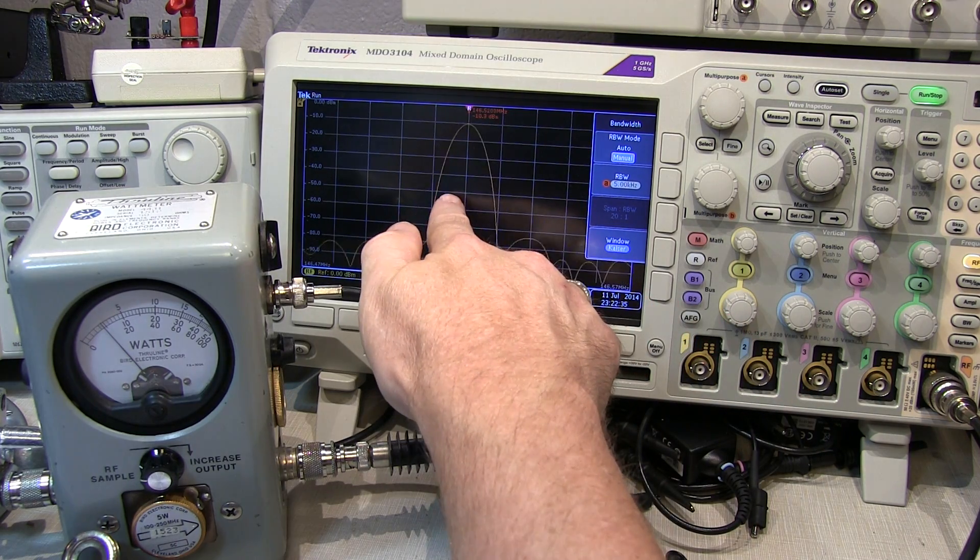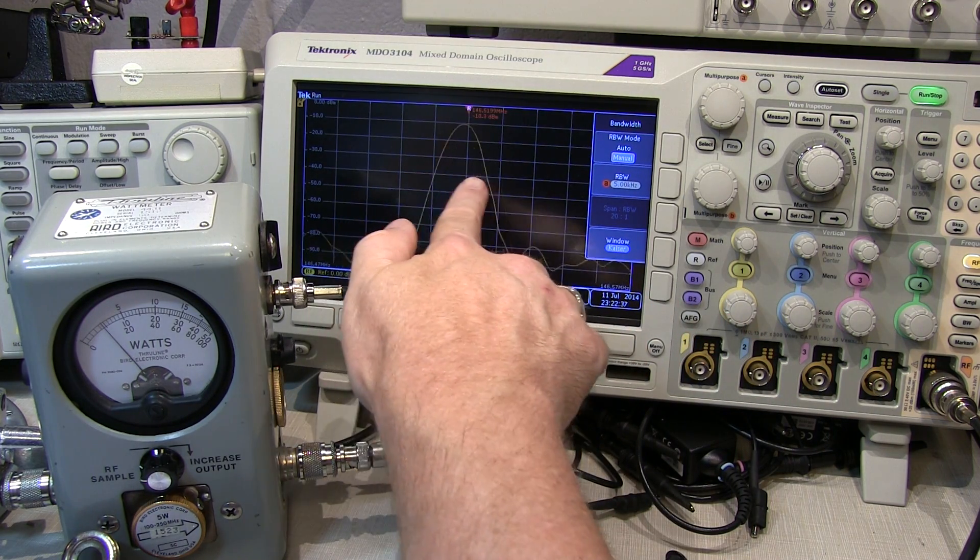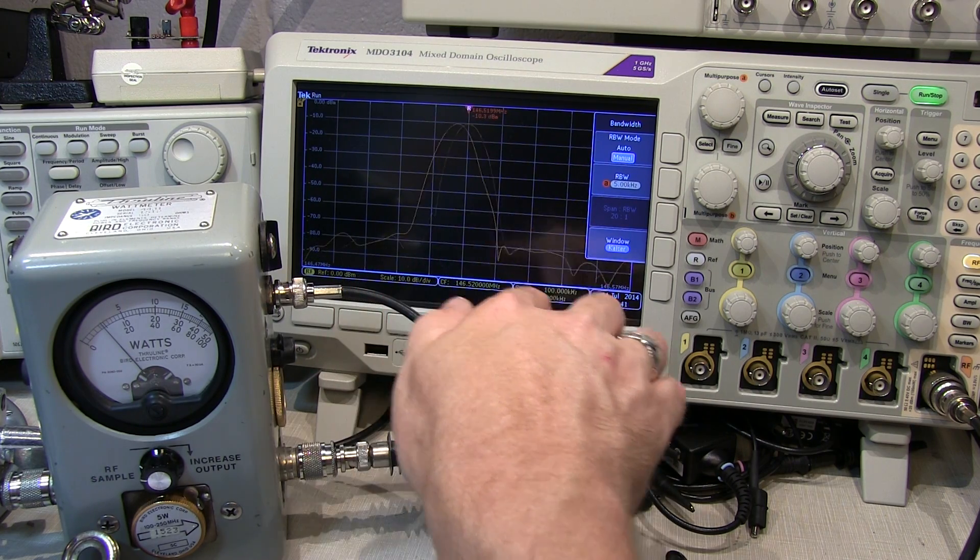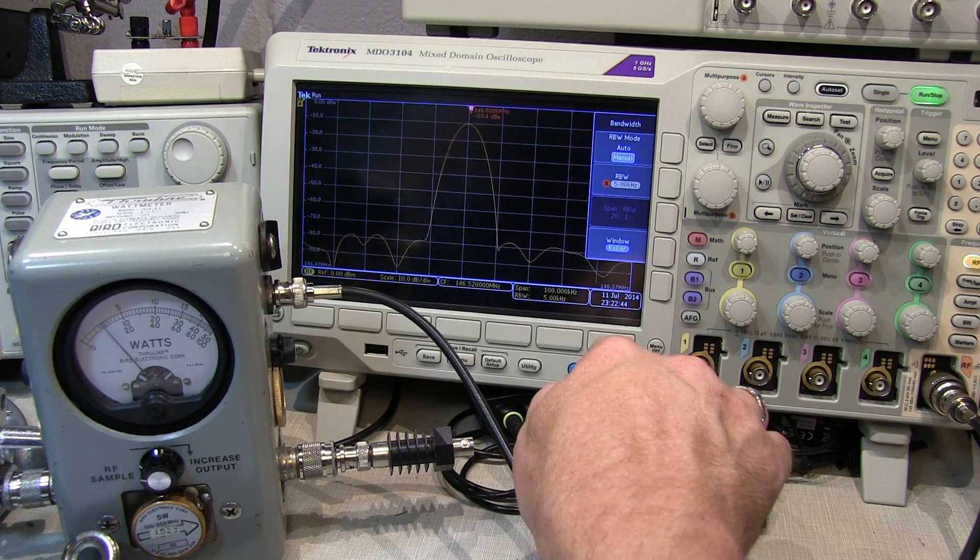That's going to make a much wider trace here, but now we can see we're moving that spectrum around. Now we can take advantage of putting some min hold and max hold traces on.